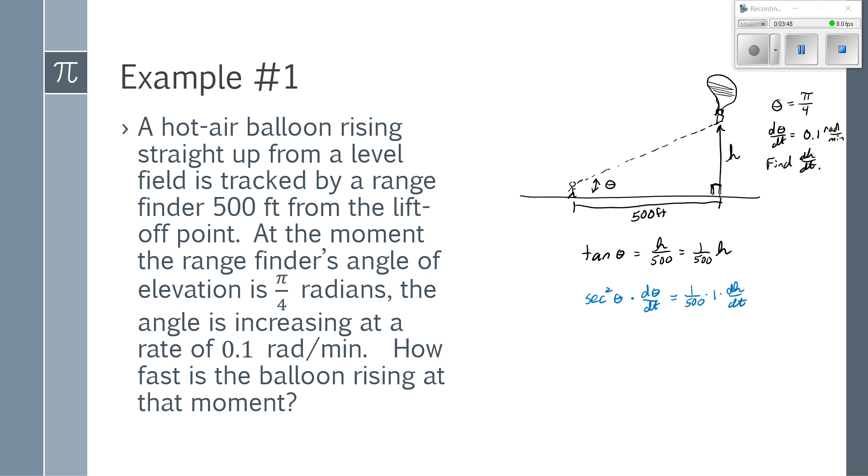At this point, it's kind of nice to go ahead and plug in our values before we start having to isolate, because it just makes isolating easier if I have all numbers involved here. So the secant squared of π over 4, dθ/dt is 0.1. I have 1 over 500 times dh/dt.